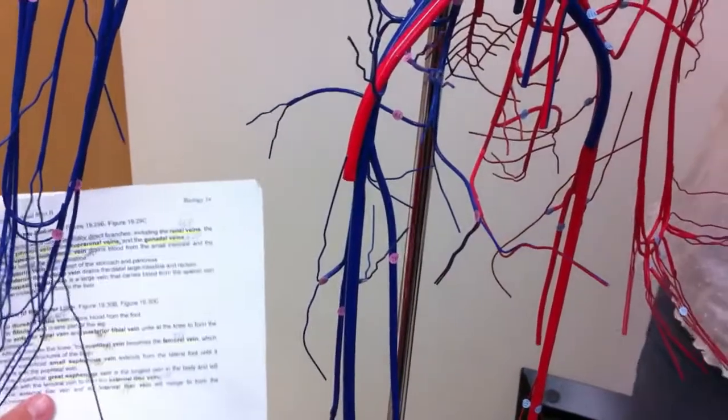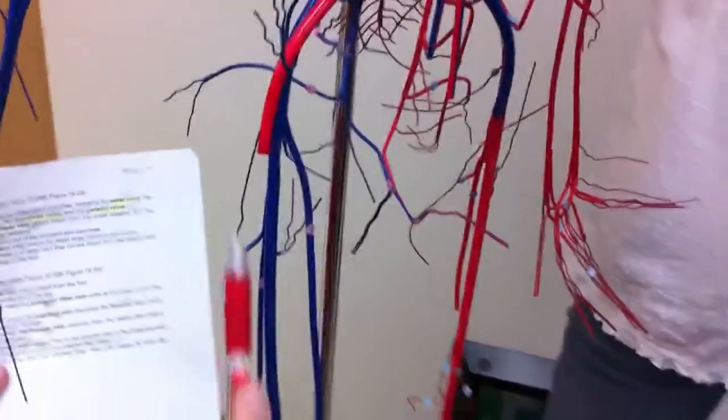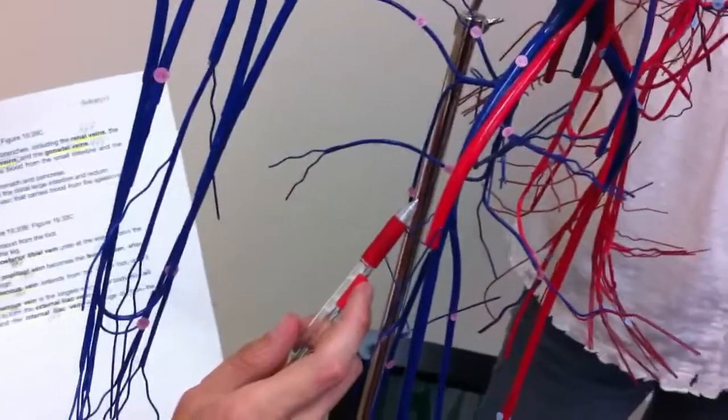External iliac vein, number 62, is right here. External iliac vein, number 62.